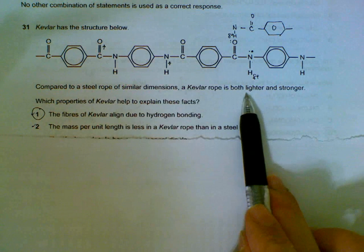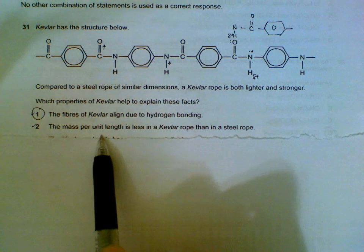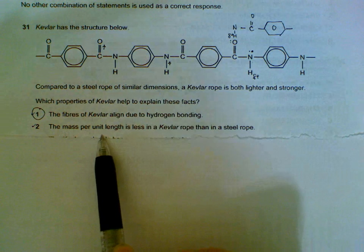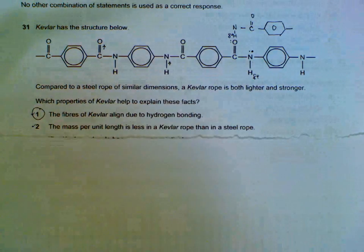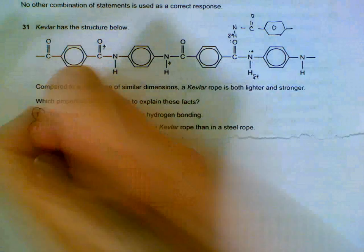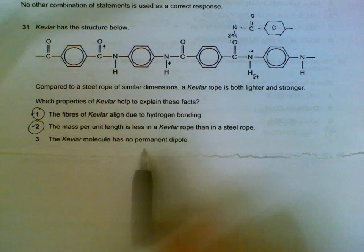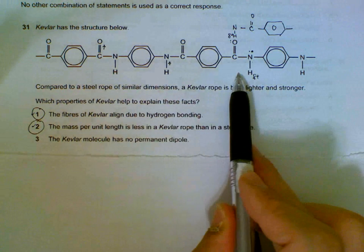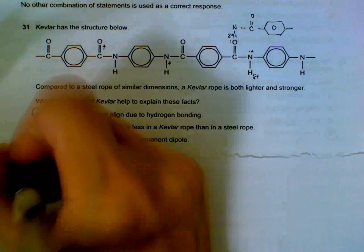The idea that it's lighter means that we expect the mass per unit length in Kevlar to be lower than mass per steel rope. Kevlar has no permanent dipole—it does have hydrogen bonding, so that's an indication that it has permanent dipole or more than a permanent dipole. So statement three is out.